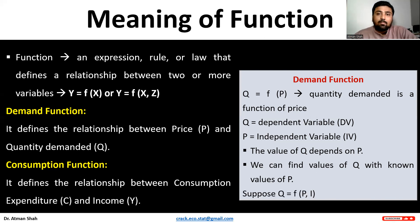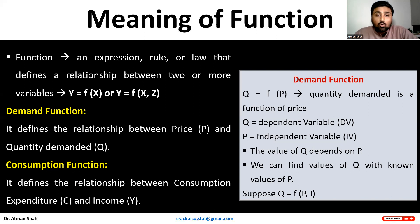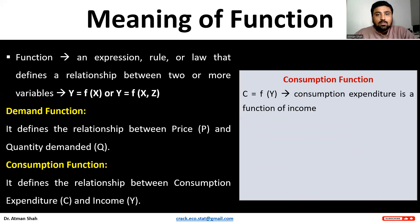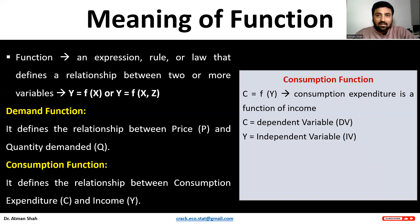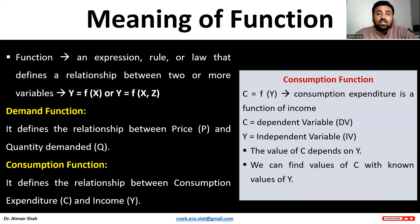We can also have the demand function as: quantity demanded is a function of price and income. In that case, quantity demanded is our dependent variable and price and income are our independent variables. For the consumption function, consumption expenditure is a function of income — consumption expenditure is the dependent variable and income is the independent variable, because consumption expenditure depends on income.